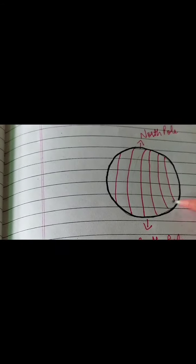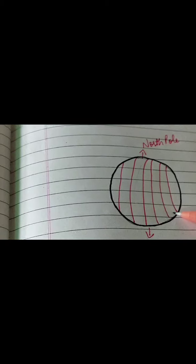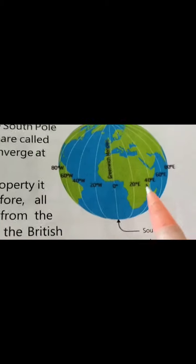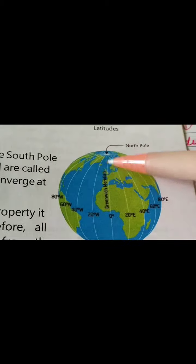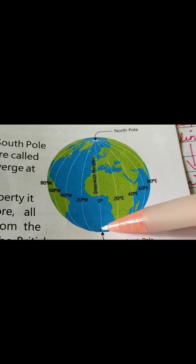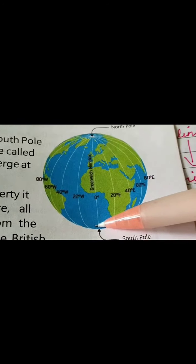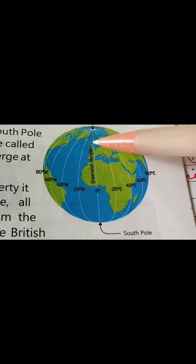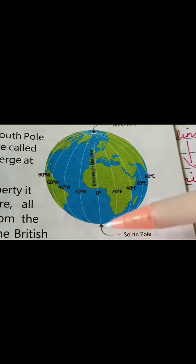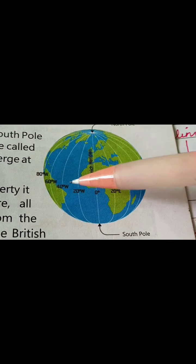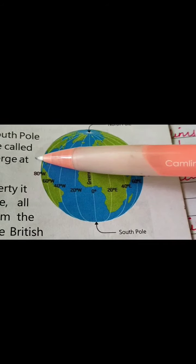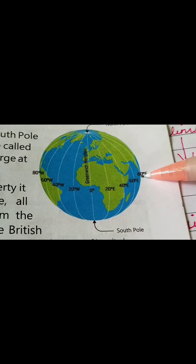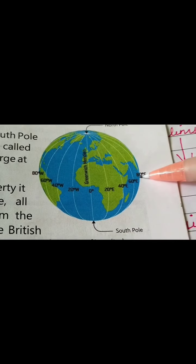And this way we are having longitudinal lines, as you can see on page 53. This is your Greenwich meridian. From here we are maintaining our timeline. When we are going this way, we write west. Going this way, we write east.